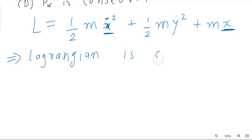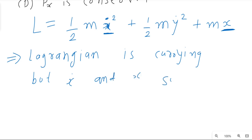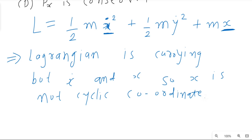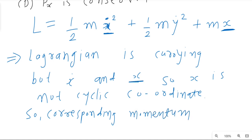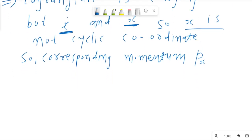Because the Lagrangian contains both x and x-dot, x is not a cyclic coordinate. Therefore the corresponding momentum px is not conserved.